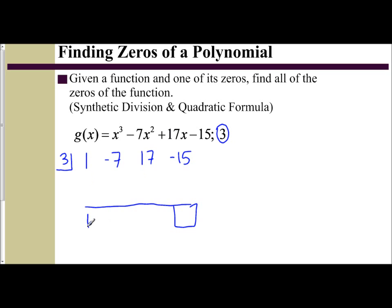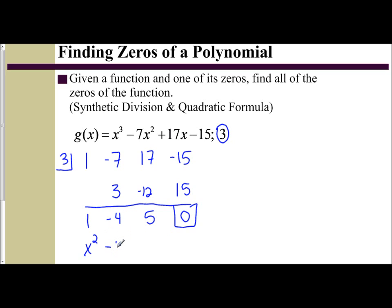The coefficients are 1, negative 7, positive 17, and negative 15. Drop down the first term. 3 times 1 is 3; add vertically, we get negative 4. 3 times negative 4 is negative 12; add vertically, we get 5. 3 times 5 is 15; add vertically, we get 0. So I write out the polynomial that remains: x² - 4x + 5.